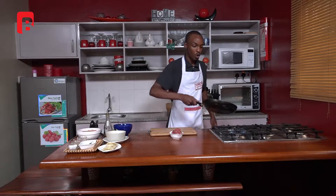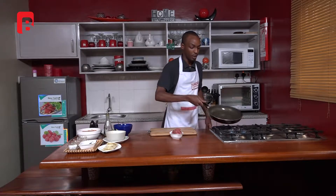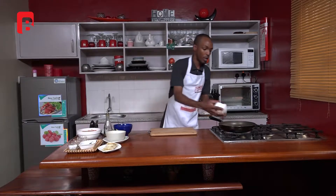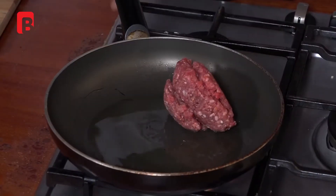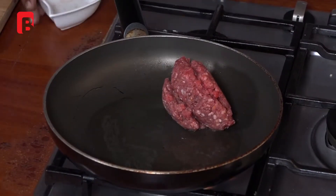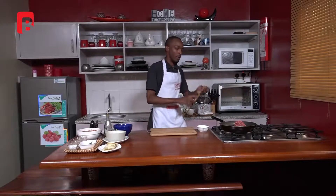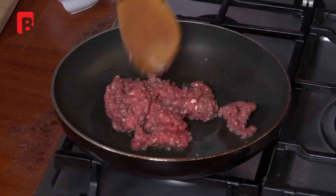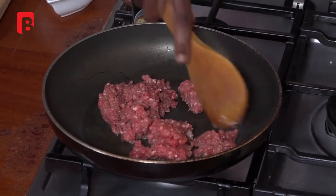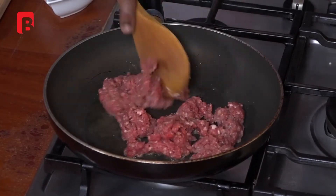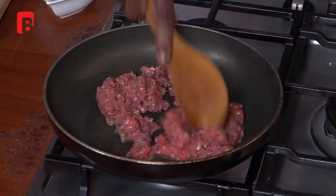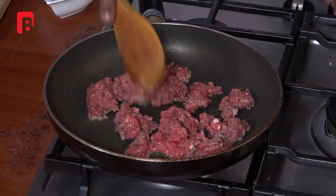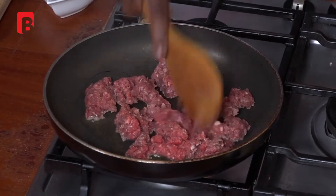So to a hot pan I'm going to add some mince, and we're just going to use our wooden spoon to break that down a little bit.